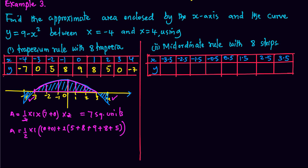And when we evaluate this, we get 35 square units. So the total area required will be 7 plus 35, which is equal to 42 square units. So that is using trapezium rule with 8 trapeziums.